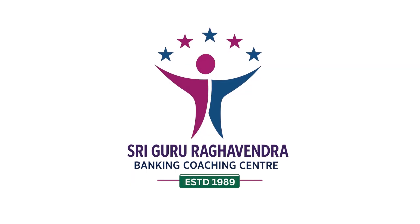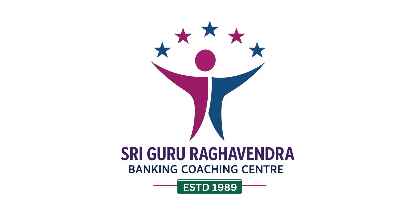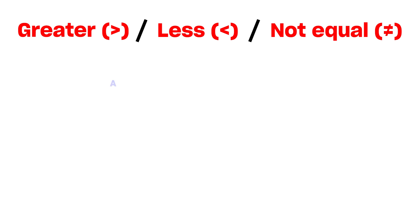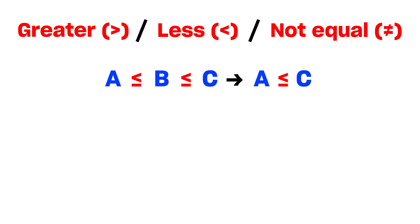One more topic we will discuss now in reasoning — that is greater than, lesser than, or inequality. How to take greater than or lesser than? This is a basic concept. Suppose there are three persons A, B, C. If A is less than or equal to B, and B is less than or equal to C, that implies A is less than or equal to C. Why? Because from A to C continuously the symbol following is less than or equal.